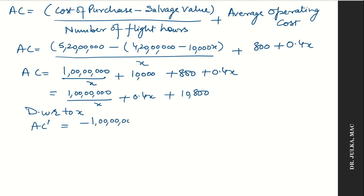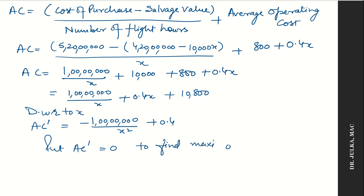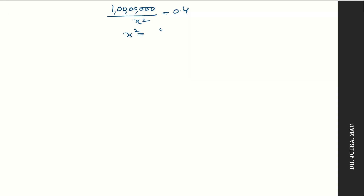To find the minimum average cost, we differentiate with respect to X. The first derivative is −1 crore/X² + 0.4. Setting the first derivative equal to 0: −1 crore/X² = −0.4, so 1 crore/X² = 0.4, giving X² = 2 crore 50 lakhs. Taking the square root gives X = 5000.